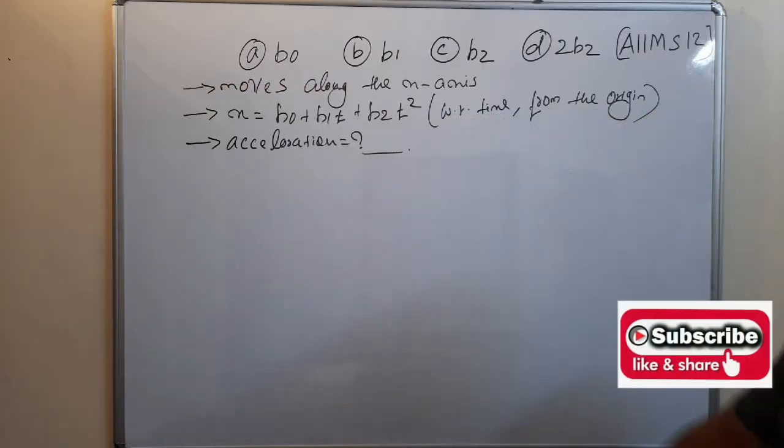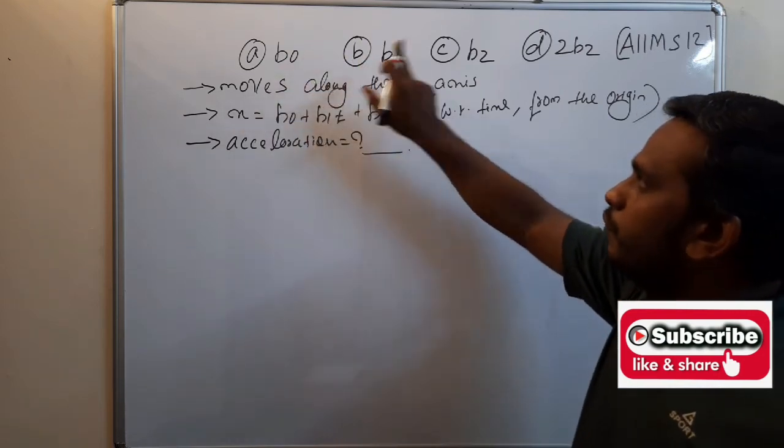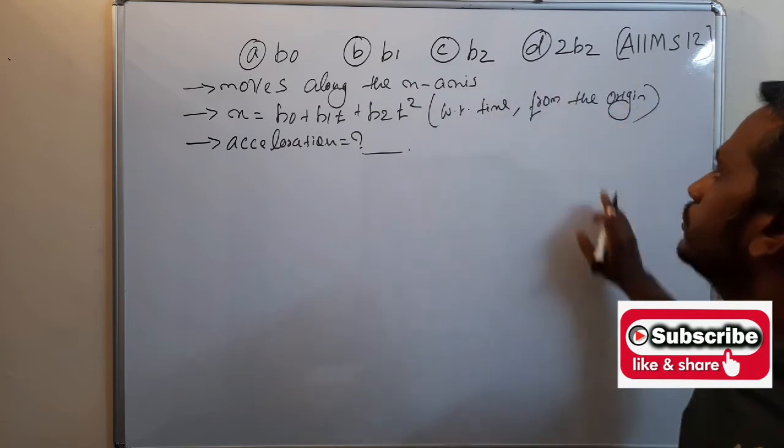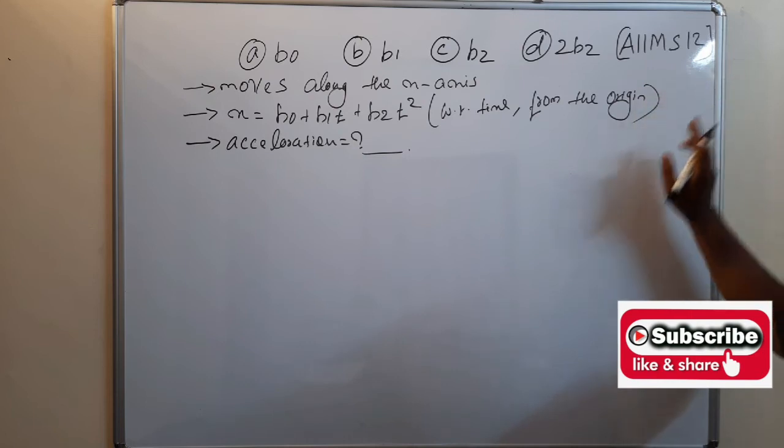These are the four options given for this question: b0, b1, b2, and 2b2. This question was asked for AIMS in the year 2012.